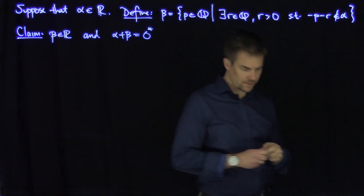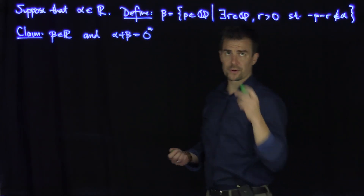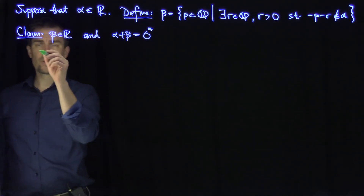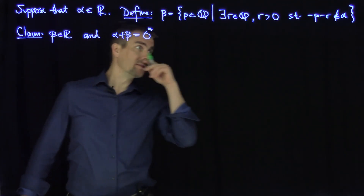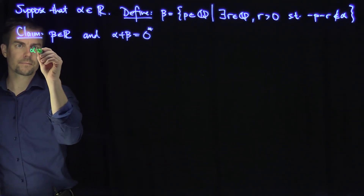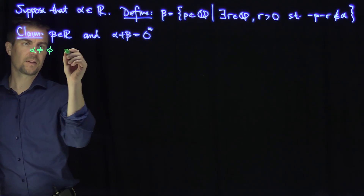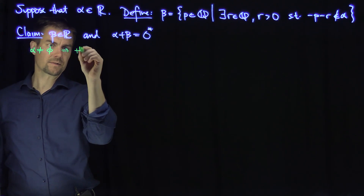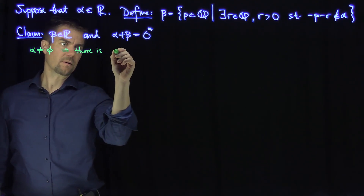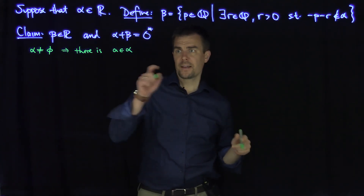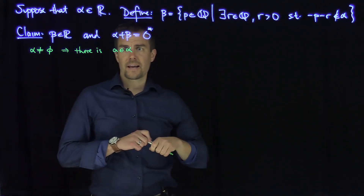So let's systematically do this. The first thing we want to do is show that beta is in fact a cut. We know that alpha is not empty, so alpha not empty implies that there is a little a in alpha.